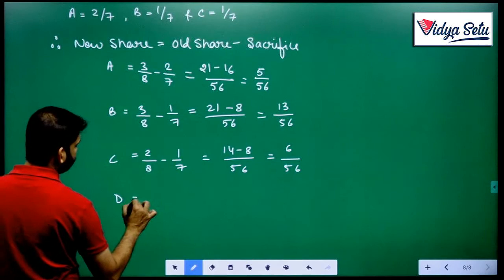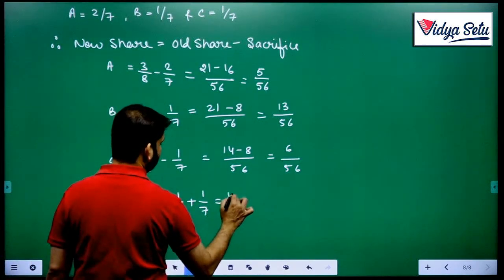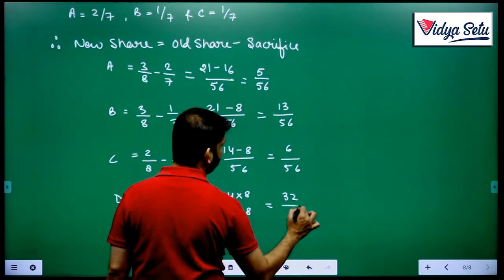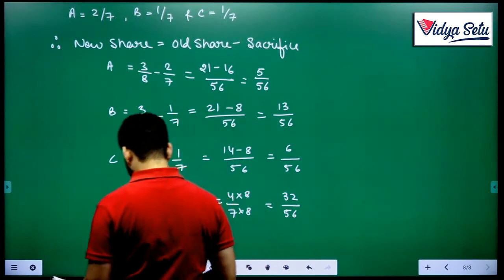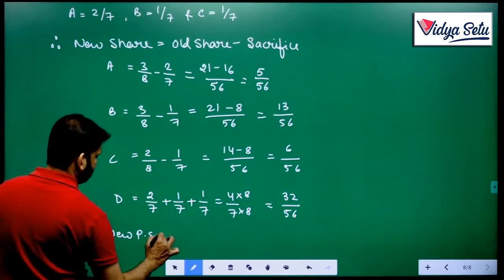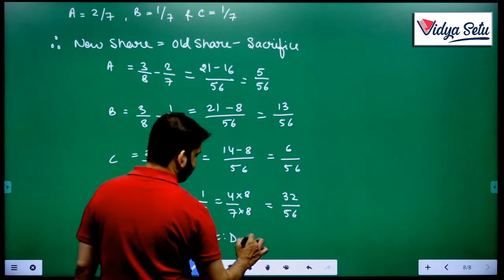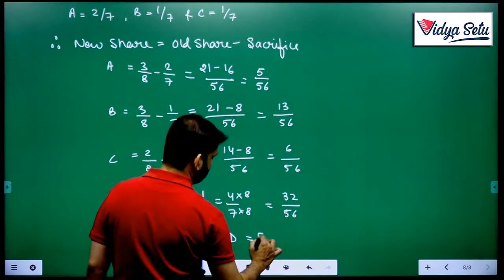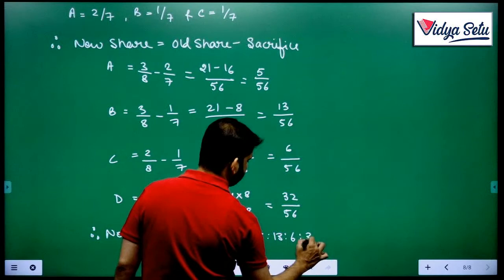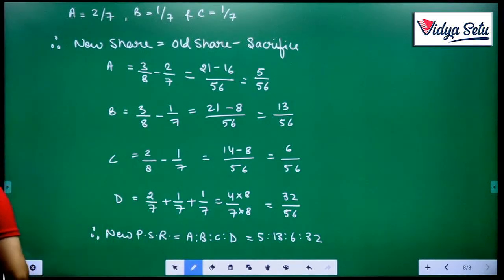And we have D who is getting 2/7 from A, 1/7 from B and 1/7 from C, that is he got 4/7, that is 4/7 times 8, so that the denominator becomes equal 32/56. So the new ratio is 5 is to 13 is to 6 is to 32. Yes the answer is correct.